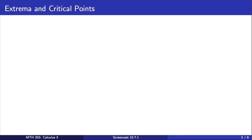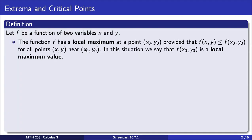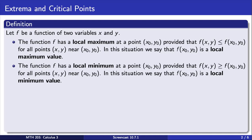In multivariable calculus, we will see that the same principles hold. We can extend the definitions of maximums and minimums to functions of two variables as follows. If f is a function of two variables, we say that f has a local maximum at a point (x₀, y₀), provided that f evaluated at this point is greater than or equal to f evaluated at all other points near (x₀, y₀). In this situation, we say that the output f(x₀, y₀) is a local maximum value. Similarly, we say that f has a local minimum at a point (x₀, y₀), provided that f evaluated at this point is less than or equal to f evaluated at all other points nearby.